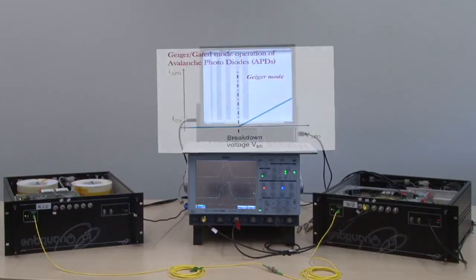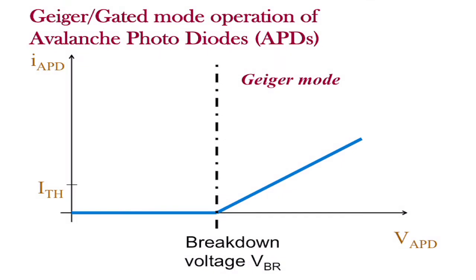To explain the principle of the attack, we need some theory. Here you can see an IV diagram of the APD, in which we can explain the Geiger mode of an APD-based single photon detector. Before the gate, you see that there is a bias voltage applied to the APD, see the blue point.